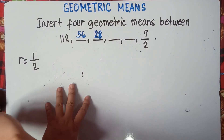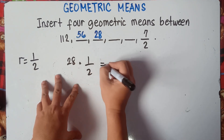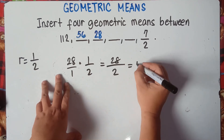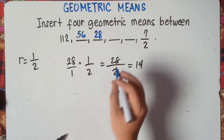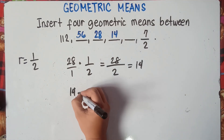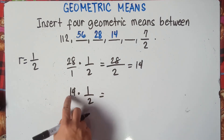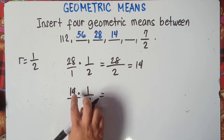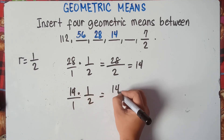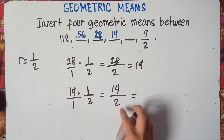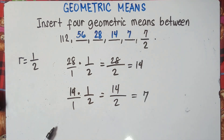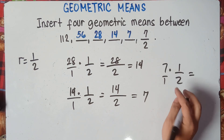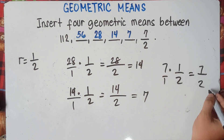Then 28 times 1 half: 28 times 1 is 28, divided by 2, that is 14. So the third geometric mean is 14. Next: 14 times 1 half — 14 divided by 2 is 7. So the fourth geometric mean is 7. And checking: 7 times 1 half equals 7 over 2, which matches our last term.